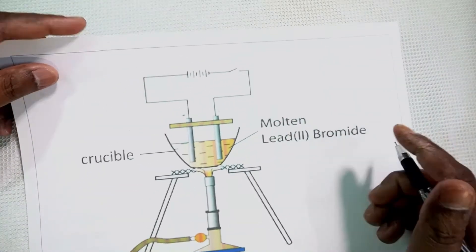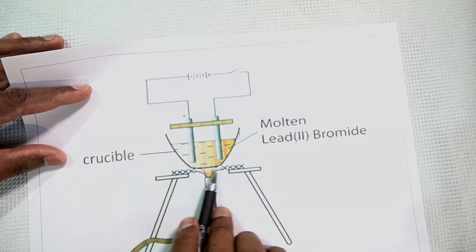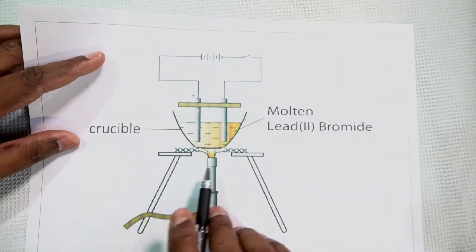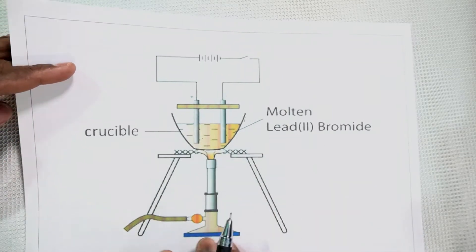You can see the arrangement here. This is the molten lead bromide inside and the crucible. This is the crucible. Crucible is an apparatus used for carrying out high temperature reactions. So silica crucible and the setup is there. Now let us see the other things about this electrolysis.